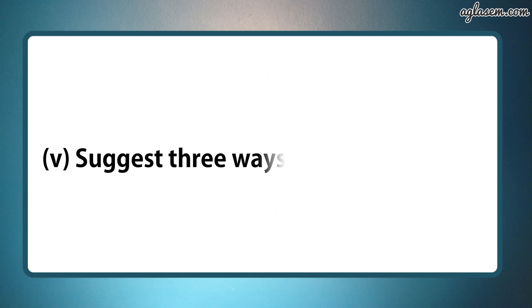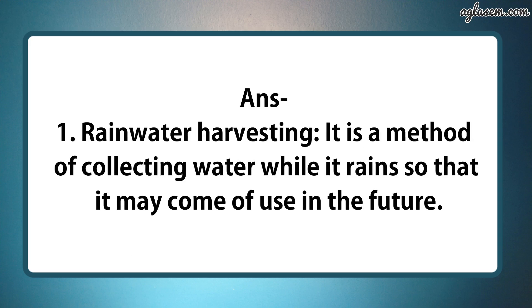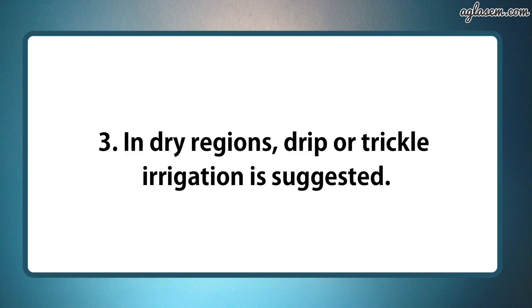Fifth part says, suggest three ways to conserve water. So the answer is, one, rainwater harvesting — it is a method of collecting water while it rains so that it may come of use in the future. Second, the canals used for irrigation should be properly built so that loss of water does not take place while the water is transported to the field. And third, in dry regions, drip or trickle irrigation is suggested.